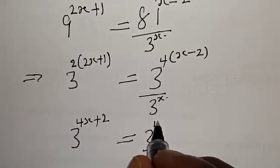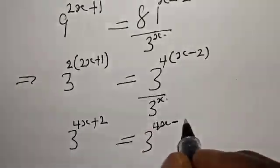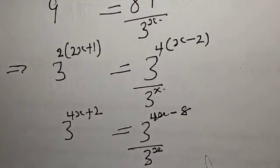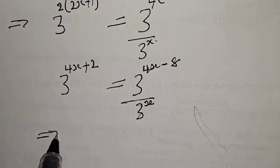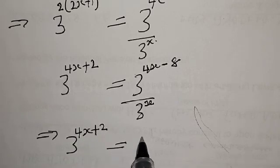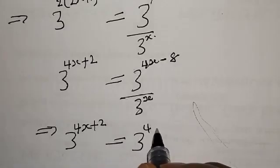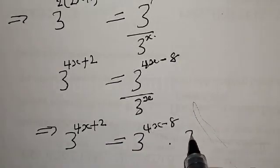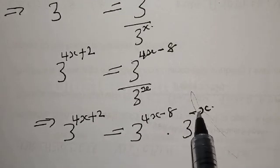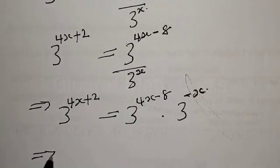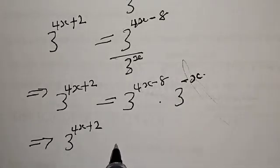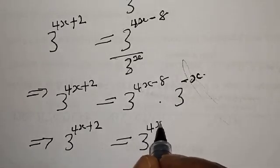This is equal to 3 raised to power 4X, times 4 times minus 2 that is minus 8, over 3 raised to power X. This implies that we have 3 raised to power 4X plus 2, to be equal to 3 raised to power 4X minus 8, times 3 raised to power minus X — that is, 3 raised to power X in the denominator can be rewritten as 3 raised to power minus X.